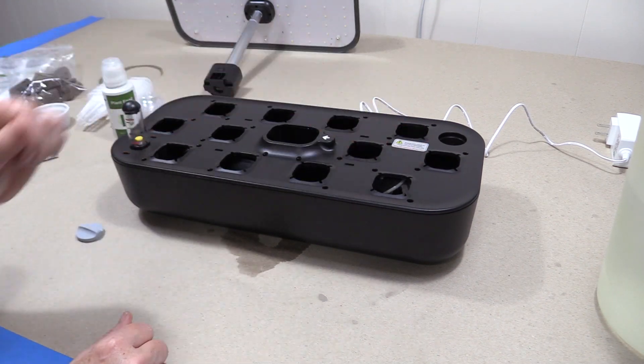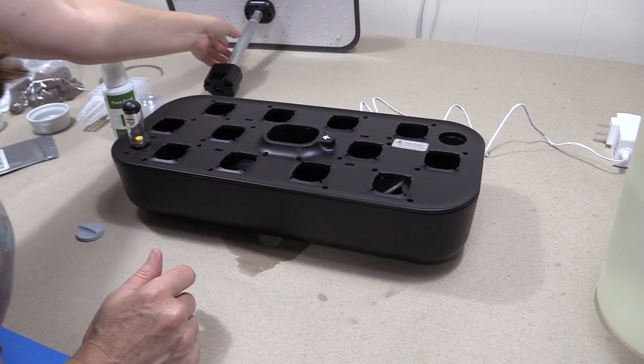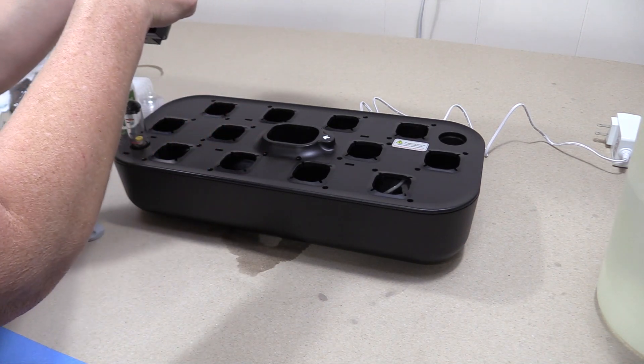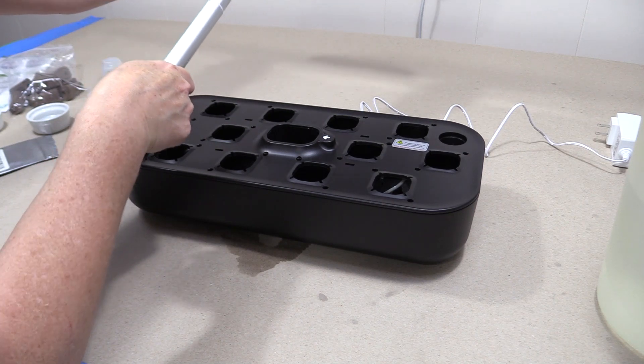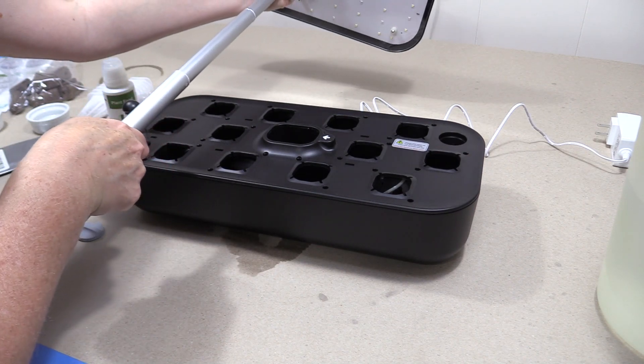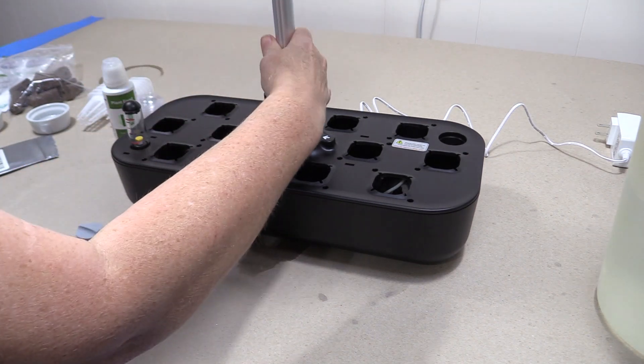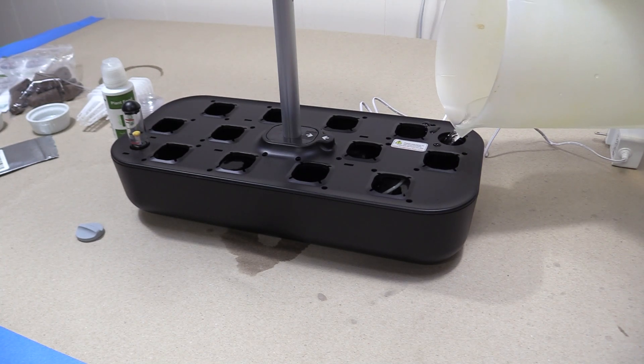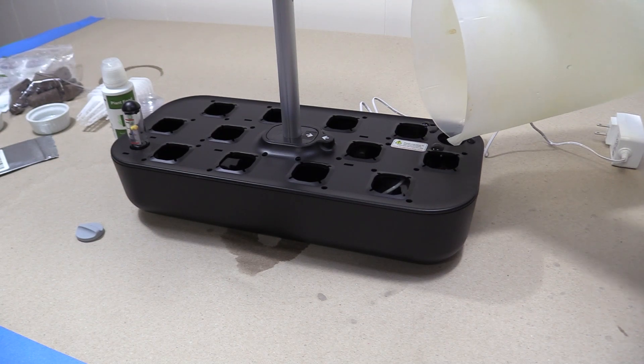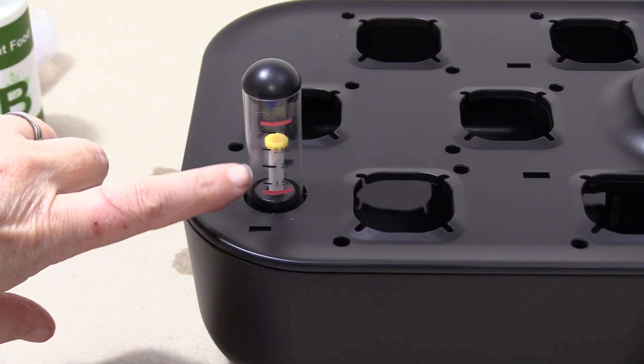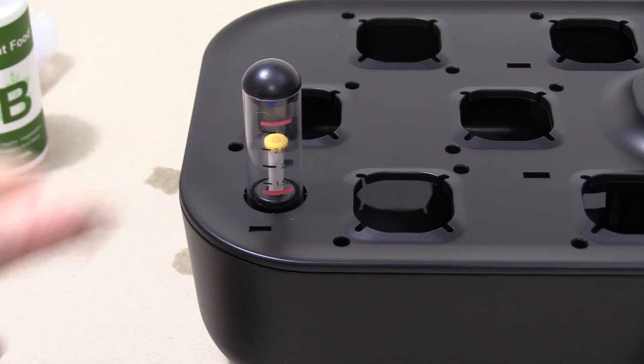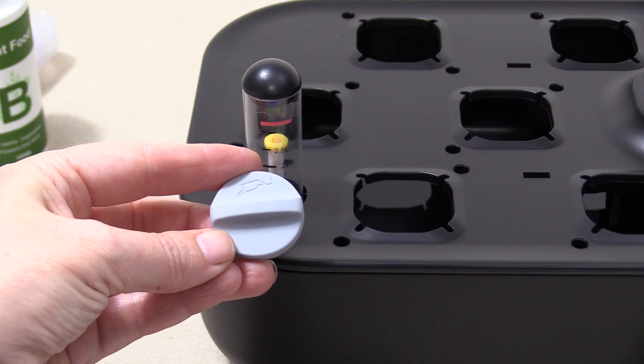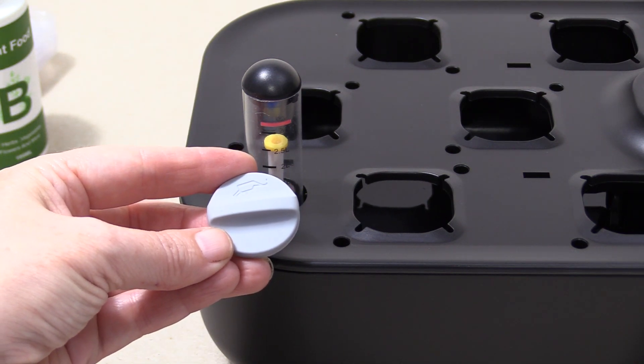This is where we want to add our water. Now before I add the water I'm going to go ahead and place the light back on but I'm going to extend it all the way up first so it's out of my way. You can see we are above the minimum but we've not gone above the maximum. I'm going to go ahead and take my rubber stopper and place it in that back corner hole that we removed it from.